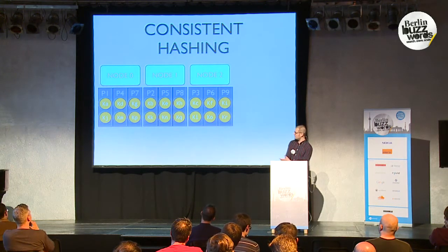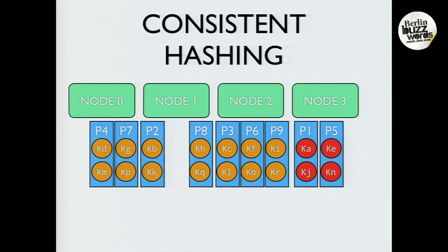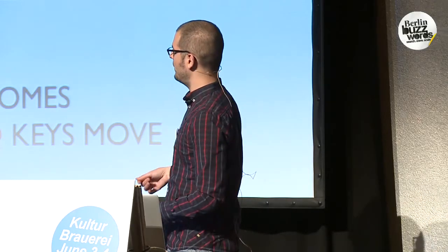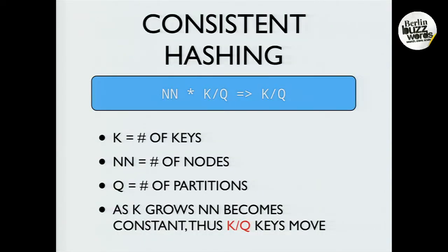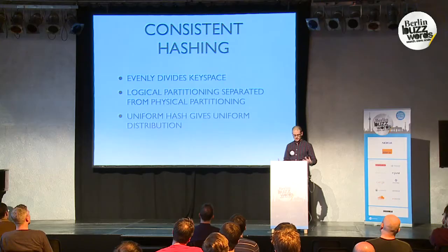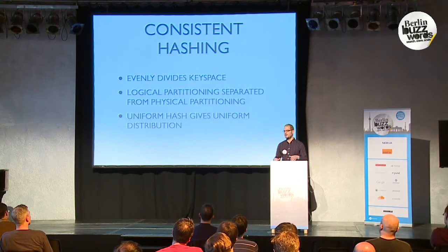If we do the same example again, you'll see now we have this partition box. If you go to add a node now, only partitions move, and you'll notice a lot fewer keys had to be moved around. In general you get N_new times K over Q, and as K grows to billions of keys, N_new essentially becomes a constant, so it's essentially K over Q — and obviously K over Q is less than K. The nice thing about consistent hashing the way React does it is that it evenly divides the key space and you get logical partitioning separated from physical. With a uniform hash, which React uses, you get a uniform distribution — and for anyone who knows Solr, that's really important because when you run distributed queries there's no distributed IDF, so you need even distribution for your ranking to be correct.